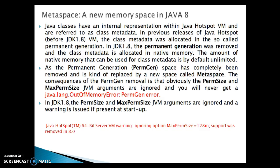The consequences of PermGen removal is that the PermSize and MaxPermSize JVM arguments are ignored, and you will never get an OutOfMemory PermGen error in JDK 1.8. The PermSize and MaxPermSize JVM arguments are ignored and a warning is issued if present at startup. So if in the VM argument you try to set size for PermGen, once you run the program you will get this warning on the console.